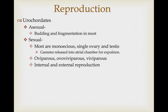Urochordates do show budding and fragmentation. As far as sexual reproduction, most are monoecious, with individuals having a single ovary and a single testis. Gametes are released into an atrial chamber for expulsion, but they show wide diversity in when gametes are released and how nutrients are delivered to zygotes. So they have some oviparous forms, some ovoviviparous forms, and some viviparous forms, with variable internal and external fertilization patterns.